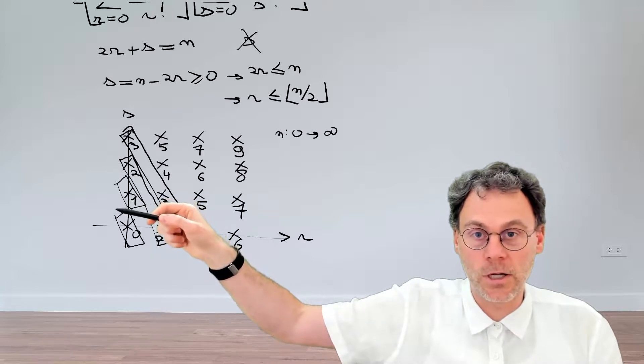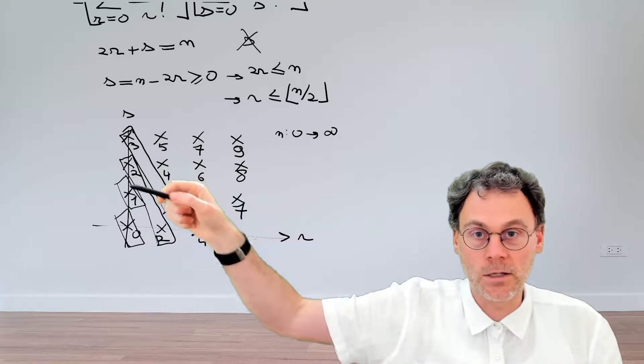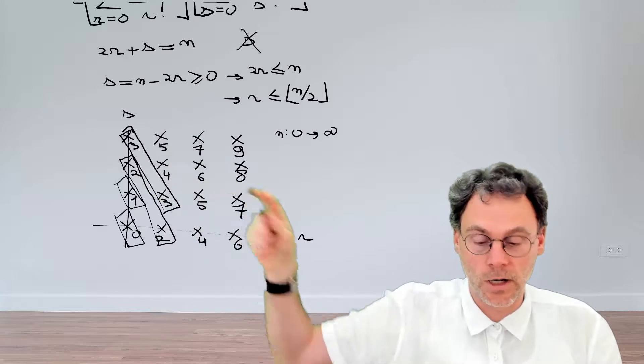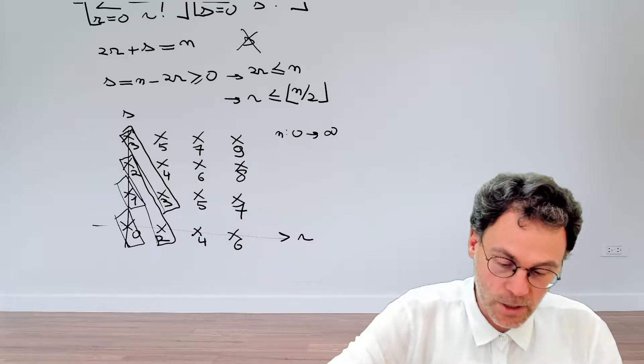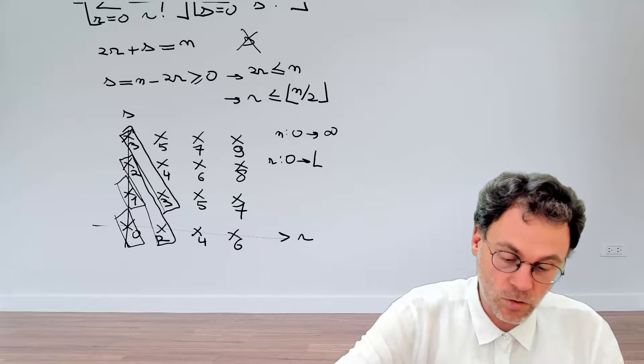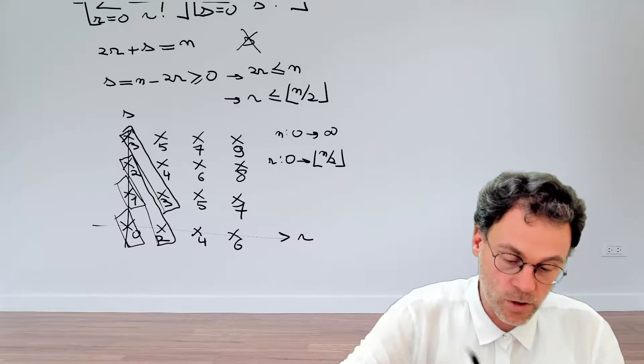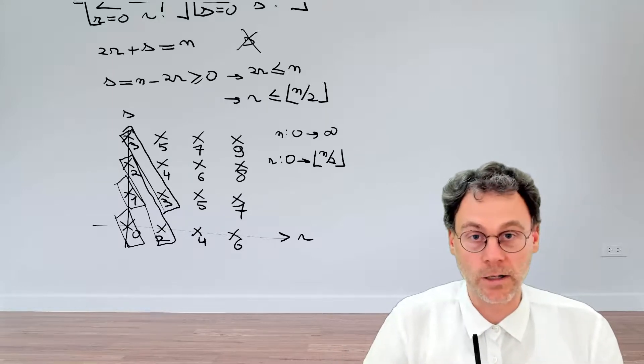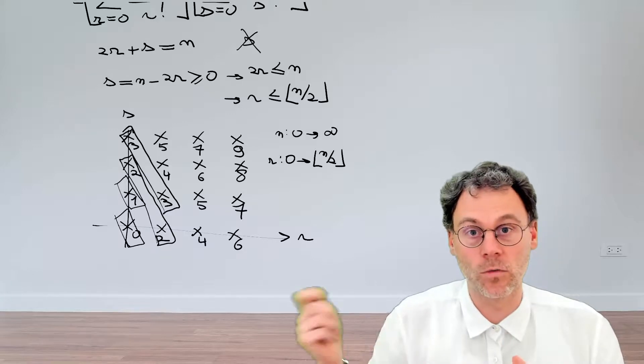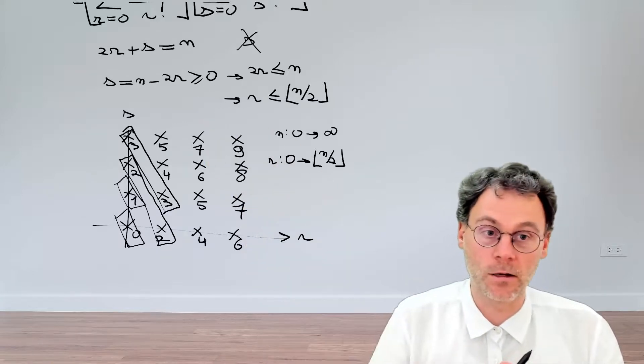So r is along this axis here. So let's say, for example, we start here and then r increases like this or like that or like that. And then every time you indeed see that r runs from 0 to the integer just below or equal to n divided by 2, which confirms what we had in the purely algebraic derivation.